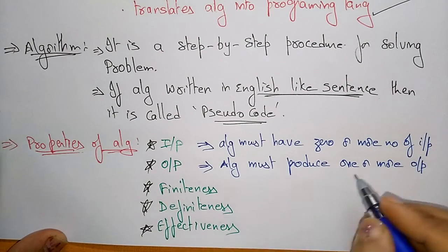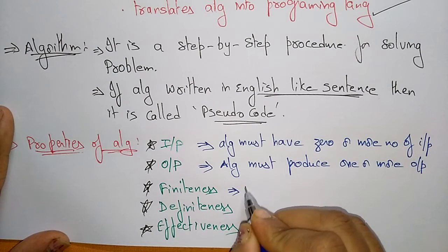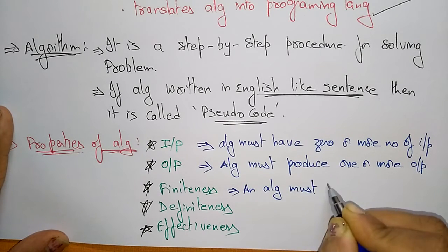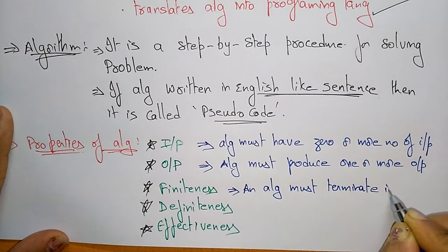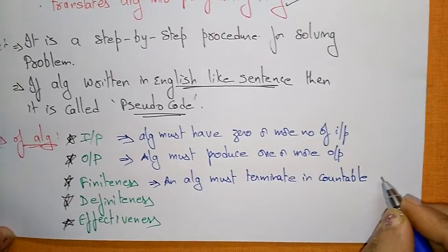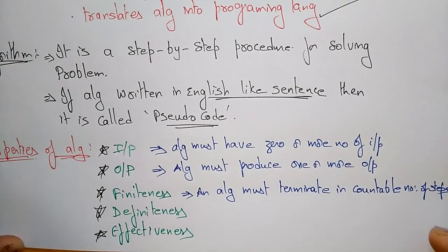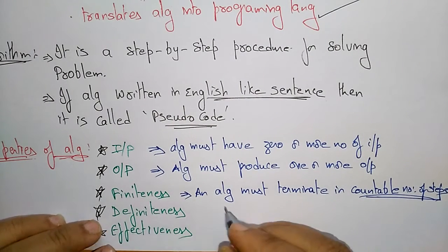Now coming to finiteness — what is meant by finiteness? Finiteness means an algorithm must terminate in a countable number of steps. Finite means the algorithm has to be terminated; it must terminate in some countable number of steps.